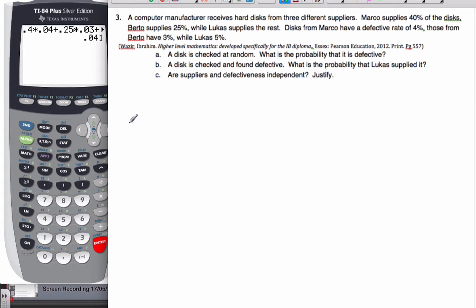Okay, so you're back now. I'm going to say the probability that Marco delivered them is 0.4. Probability that Berto supplied it was 0.25. The probability that Lucas supplied them is going to be then the rest, which is 0.35, because they have to add up to 1.